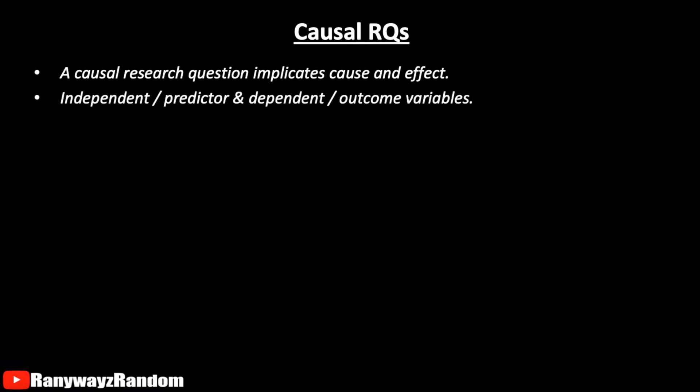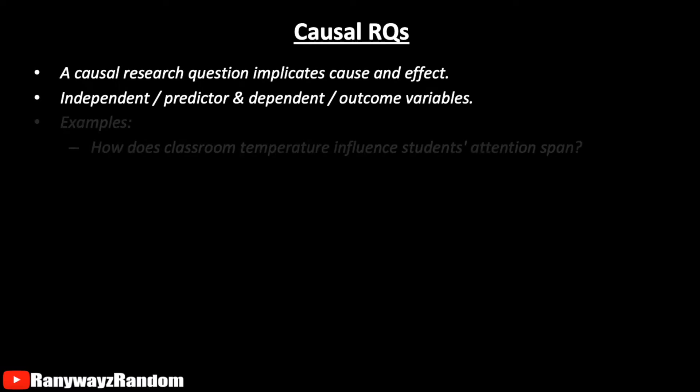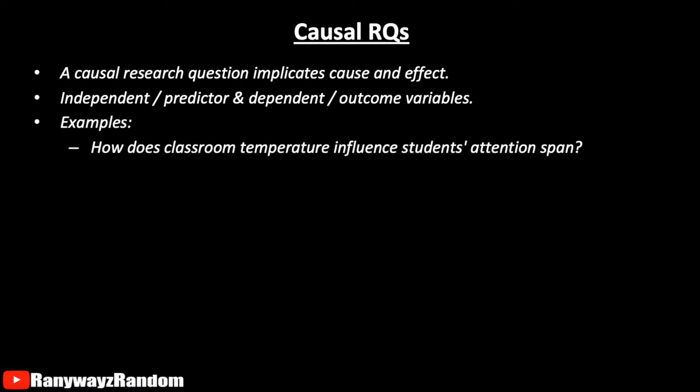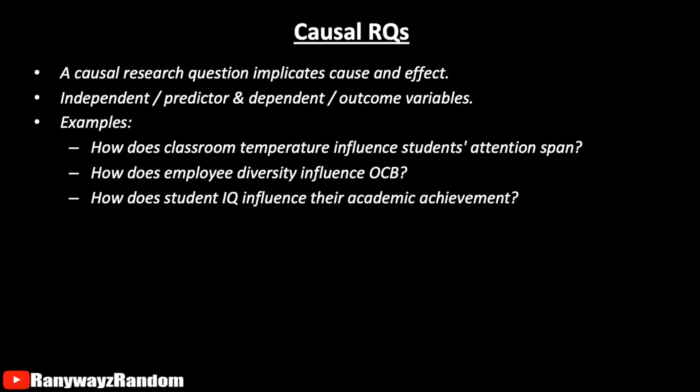A causal research question is one which clearly implicates cause and effect. In other words, one should easily observe in a causal question how an independent variable would cause and influence the dependent variable. For instance, how does classroom temperature influence students' attention span? Or how does employee diversity influence organizational citizenship behavior? Or how does student IQ influence their academic achievement?